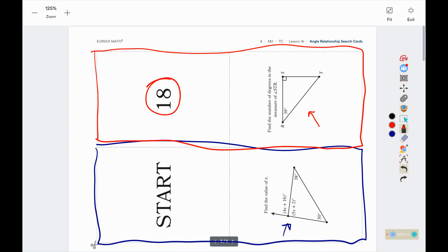So I have find the number of degrees in the measure of STR. STR is this angle here. I see that I have a 90 degree angle from this little square in the corner, a 39 degree angle, and an unknown angle. I'm going to call this one T. And those together would equal 180 degrees.